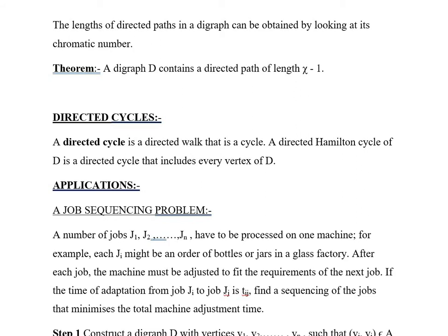Theorem: A digraph D contains a directed path of length χ - 1. This is a statement of a theorem which can be easily proved. Next is directed cycles. A directed cycle is a directed walk that is a cycle. A directed Hamilton cycle of the digraph D is a directed cycle that includes every vertex of D.